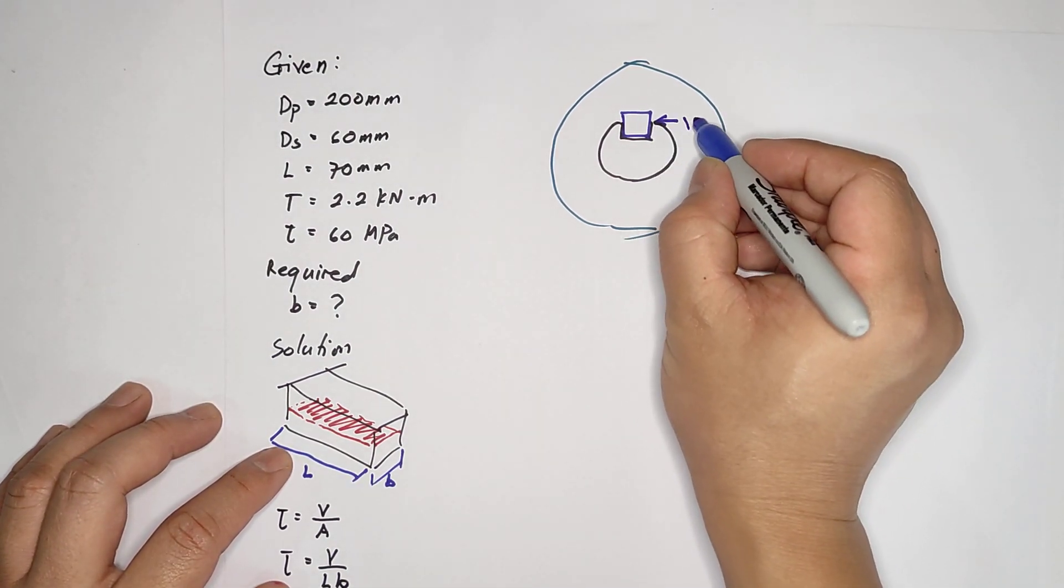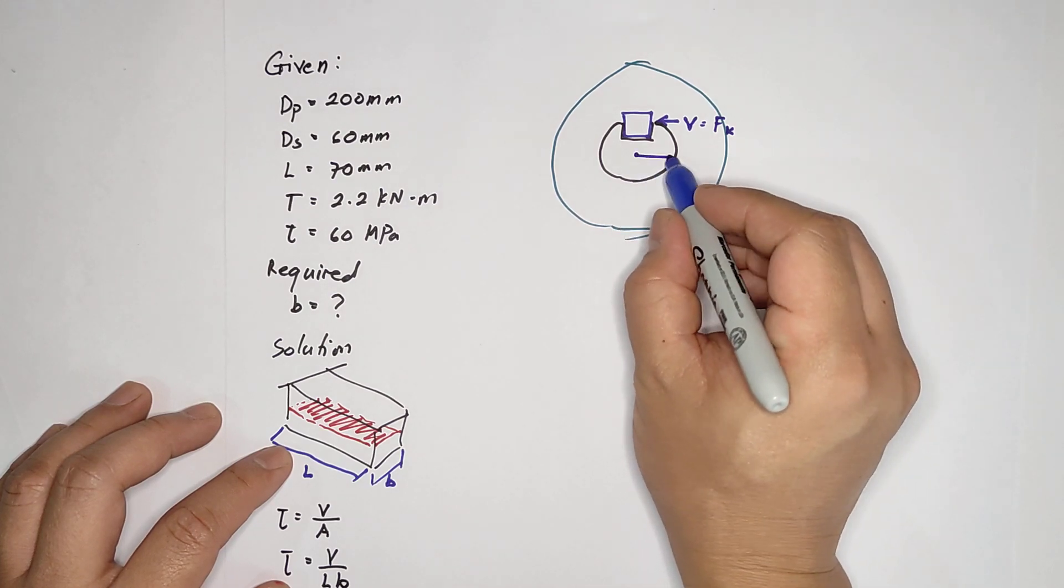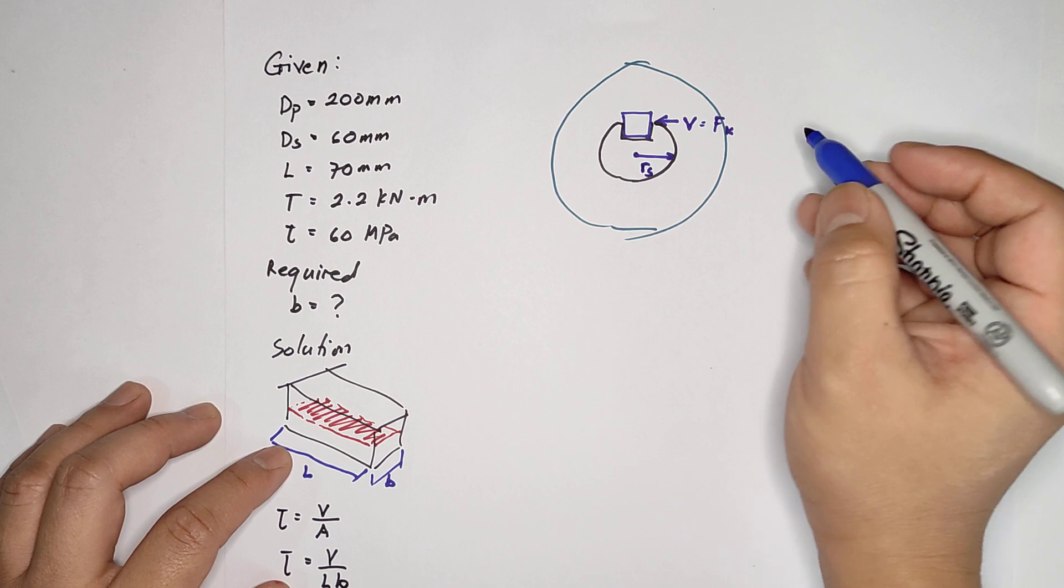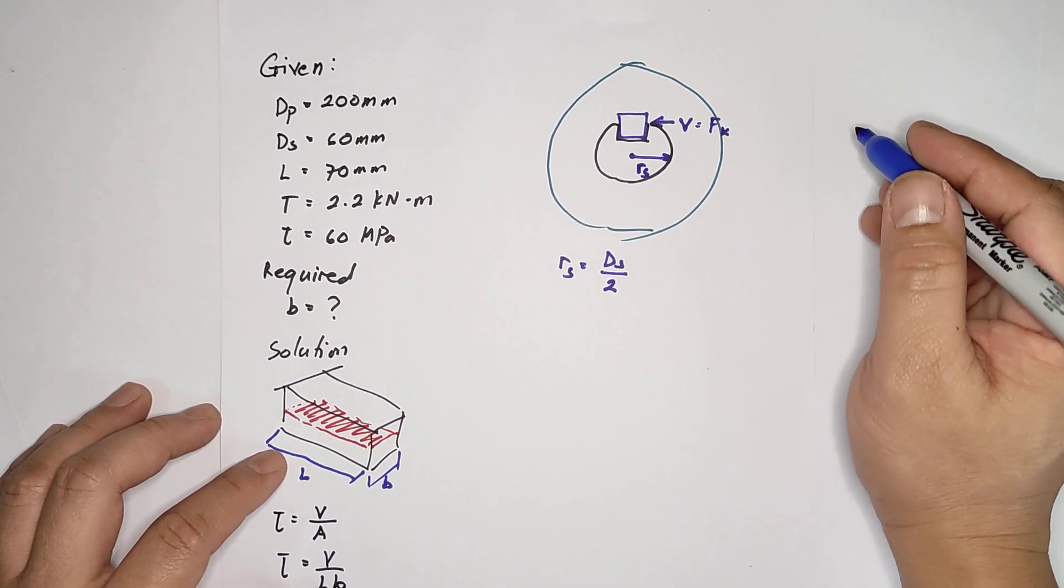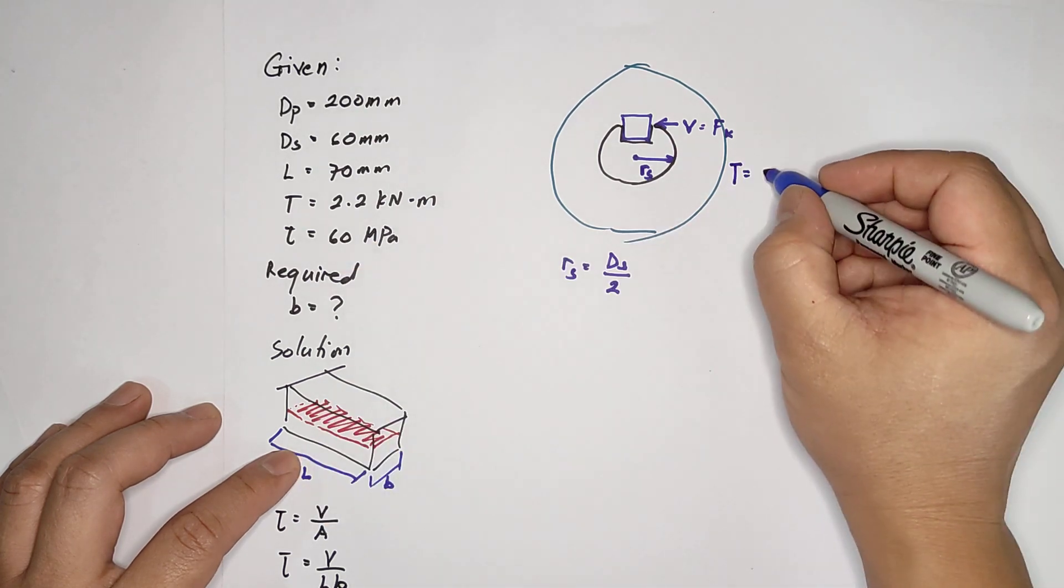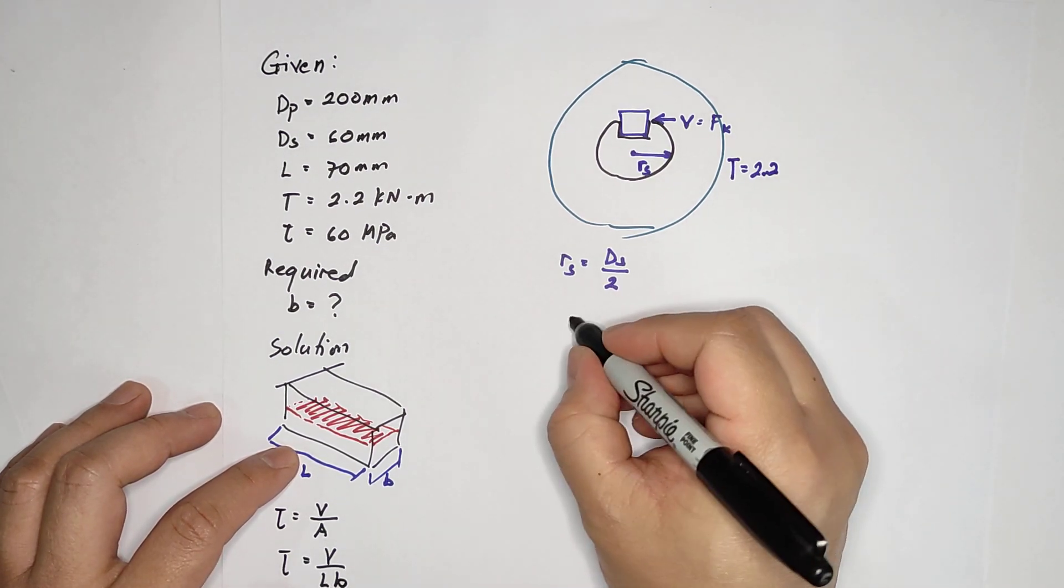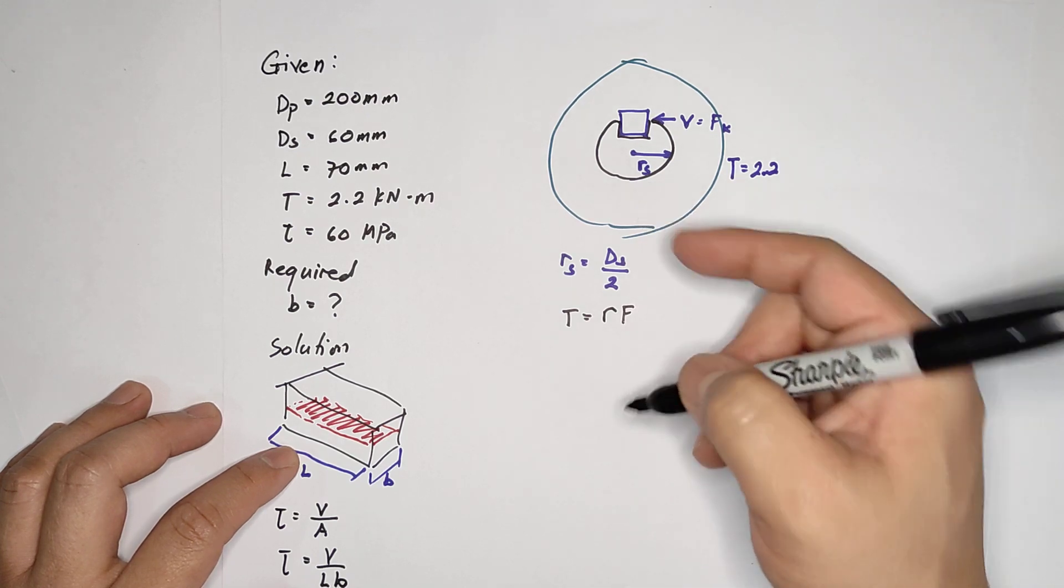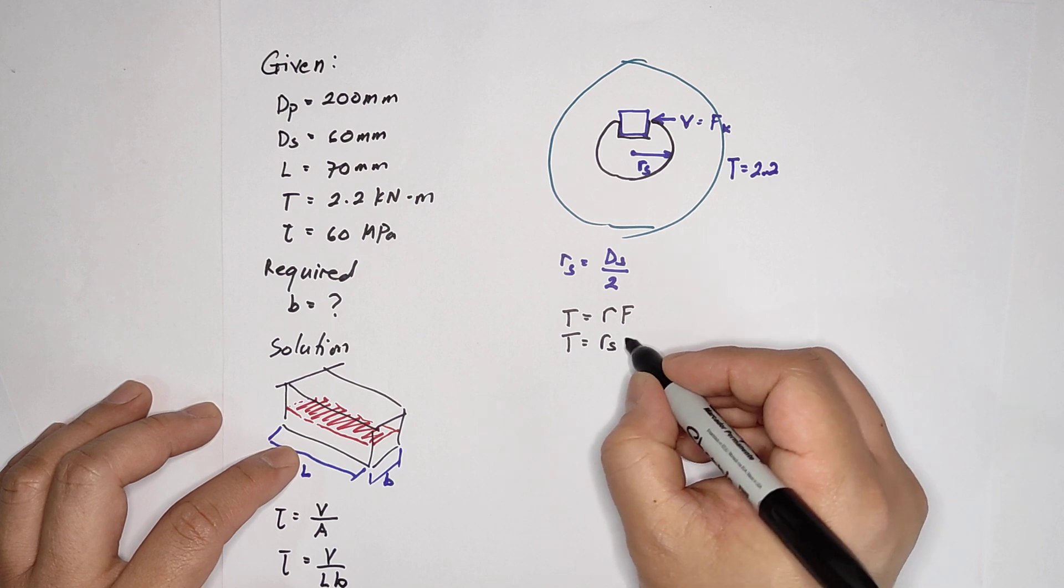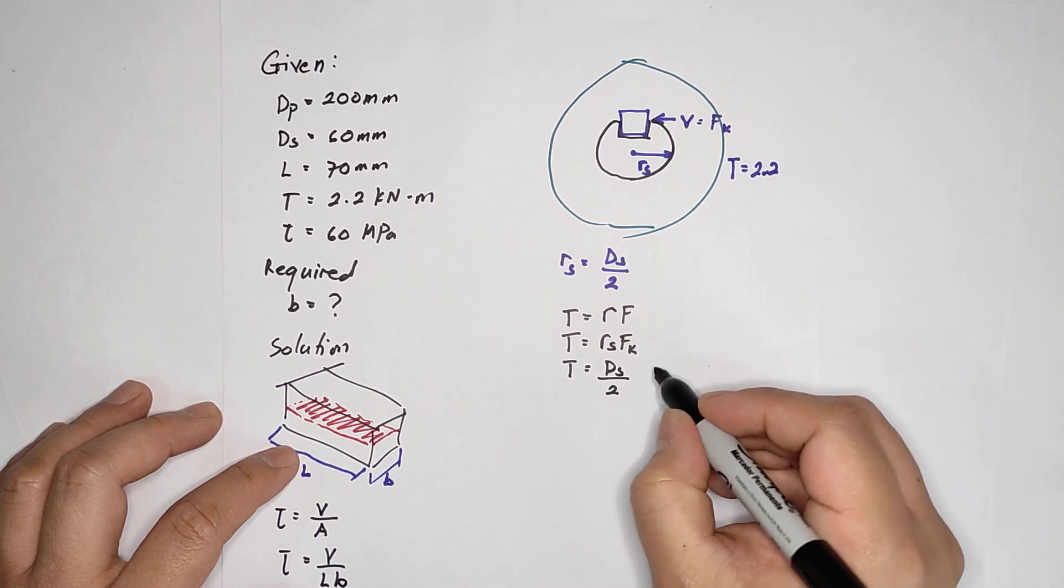This one experiences force key. You have here radius, radius ng shaft, and that radius ng shaft RS is equivalent to DS diameter of the shaft over 2. Now you're given with the torque, the torque is 2.2 kilonewton meter. Torque is actually the radius times the force. In this case, the torque is equivalent to RS then FK, or to change it, you now have DS over 2 then FK.